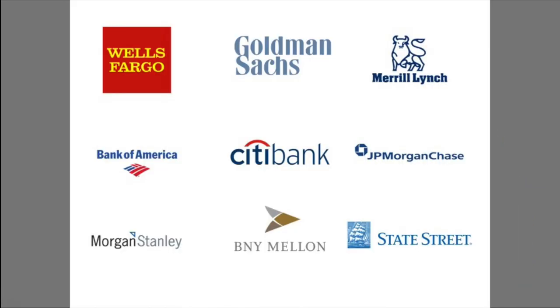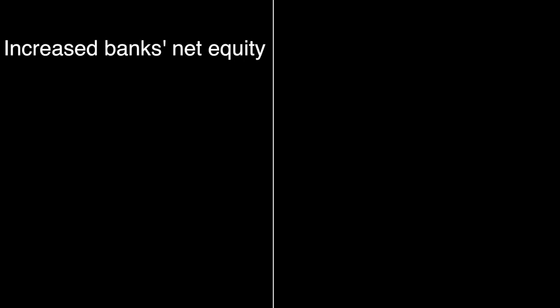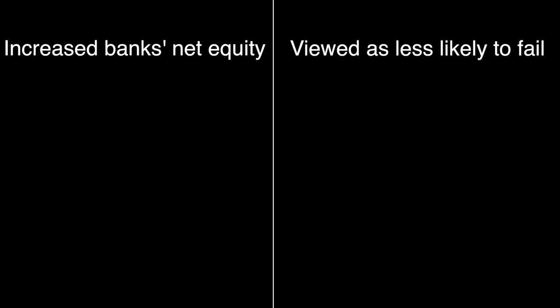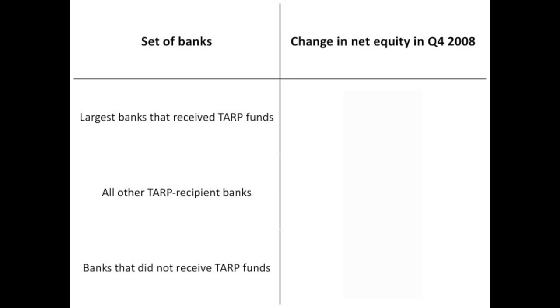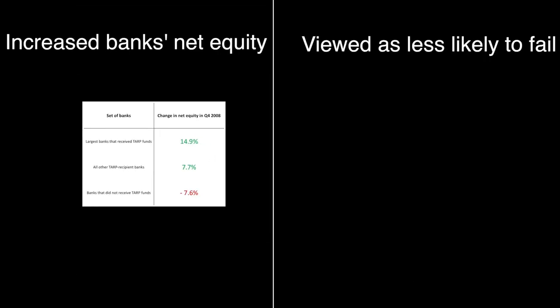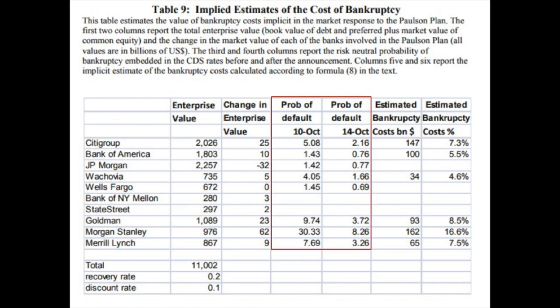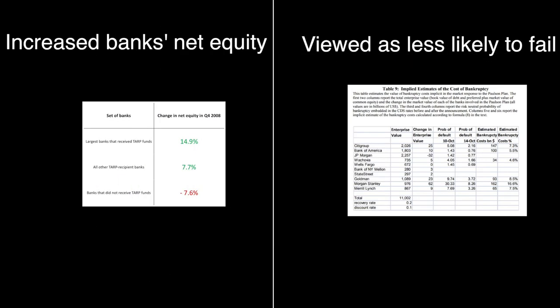Now, given this policy choice, the question is: did it work? Did TARP help stabilize the financial industry? Did TARP improve the lives of ordinary Americans and revive the economy? Let's turn to the research. The first place to look is at the banks themselves. If TARP succeeded in stabilizing the banks, then we should expect two things. First, the net equities of the banks that received TARP money should have risen by more than those of banks that didn't. Second, investors should perceive those banks as being less likely to fail. On both counts, TARP succeeded. The net equity of banks that received TARP funds grew by 7.7% over the next quarter, while the net equity of banks that didn't receive TARP funds shrank by 7.6% over the same timeframe. The risk-neutral probability of default fell substantially by the very next day, meaning that investors now believed the banks were much more likely to survive.